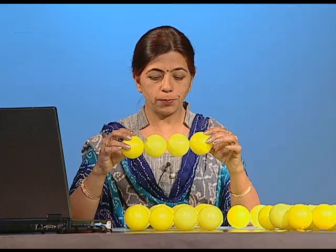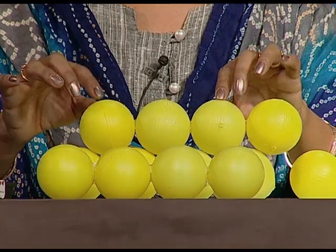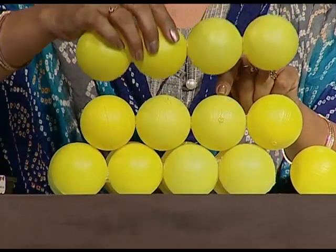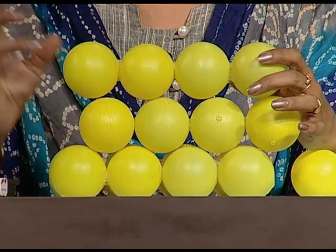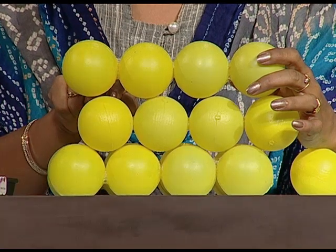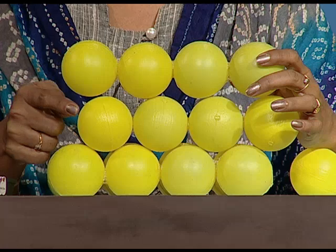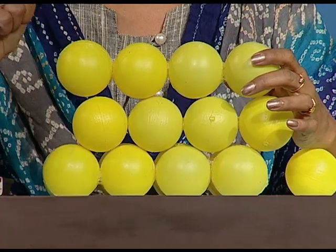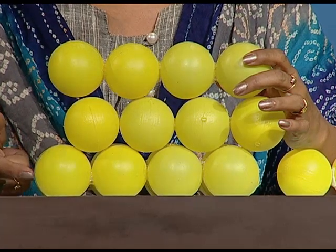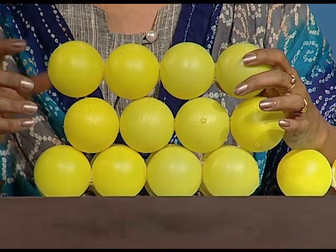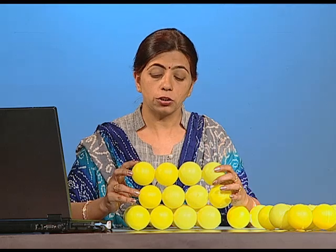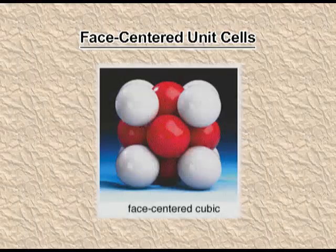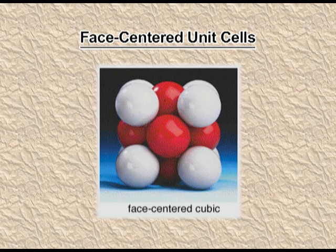The second option for three-dimensional packing is to keep the second layer in the grooves of the first layer, and then the third layer on the atoms of the first layer again. This gives ABAB type packing. The unit cell generated from this arrangement is of the FCC type — that is, the face-centered unit cell.